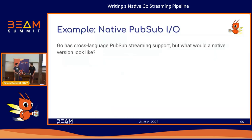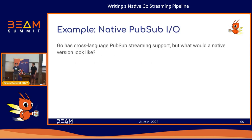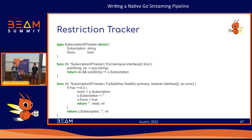The example we're going to walk through is a very simple native PubSub IO in Go. Go has cross-language PubSub IO — cross-language is a great Beam feature for adding Java's or Python's transforms into Go. But if you don't want to use Java, let's use native Go. This is using an example currently in the Beam repo: the Go SDK's examples directory has a folder called native_wordcap. All of this code is there, somewhat edited and abbreviated for clarity, but you can play with it, improve it, and PRs are welcome.